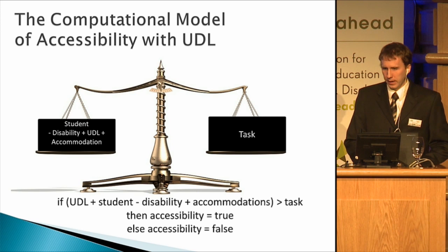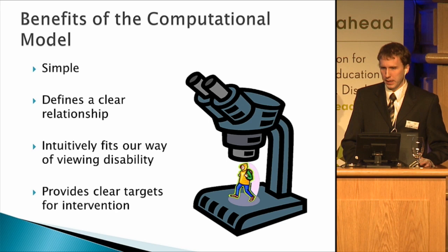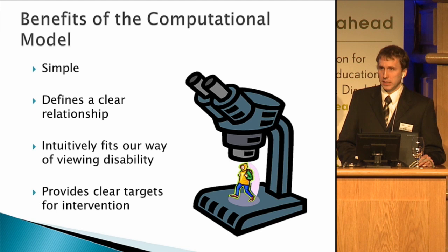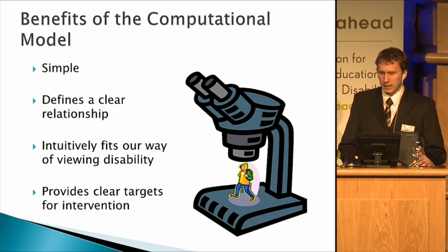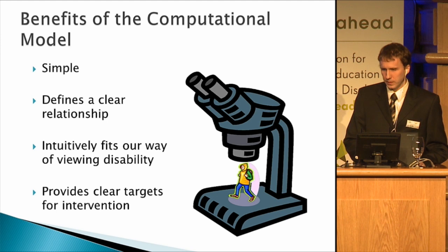What are the benefits of this kind of model? Well, it places the student under a microscope. It's simple — it gives us a nice formula, something to check off, some way to think about this in a simple and direct way. There are clear relationships. It fits how we think about the world and how we think about disability, fundamentally, unless we check ourselves. It gives us clear targets, ways to intervene. But what are its limitations?